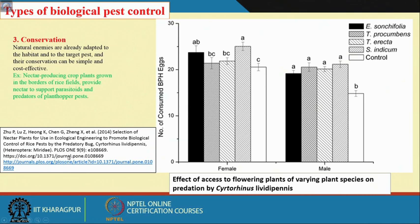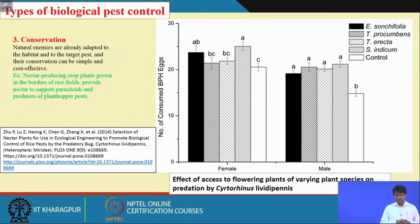This was published in PLOS ONE in 2014: 'Selection of natural plants for use in ecological engineering to promote biological control of rice pests by the predatory bug Cyrtorhinus lividipennis.' To summarize biological control, we must introduce natural enemies to fields where they are not present, augment their populations by releasing them, and conserve their populations by providing suitable habitat like nectar-producing plants so they can increase in activity and protect crops from harmful insect pests and diseases.